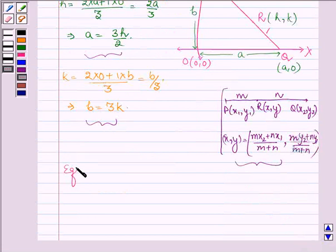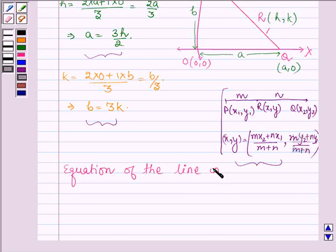Now the equation of the line in intercept form having x-intercept A and y-intercept B is x upon A plus y upon B equals 1.